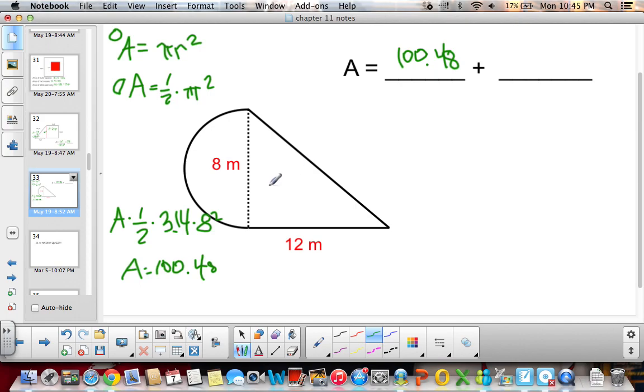And then the area here, this is our base, this is our height. The area of a triangle, remember, is base times height over 2. So 12 times 8 divided by 2. 12 times 8 is 96 divided by 2 is 48.